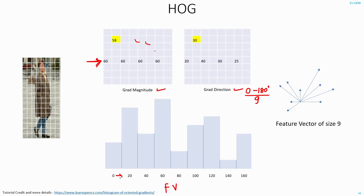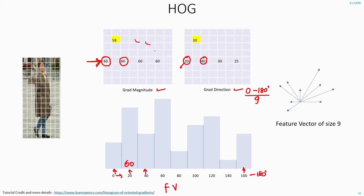That is from 0 to 20 degrees is 1 bin, 20 to 40 is 1 bin, 40 to 60 is 1 bin, and so on. The last bin will be from 160 to 180 degrees. Once I do that, I will check the gradient magnitude and gradient direction at any pixel position. In this case it's 20 degrees, so I will see what the corresponding gradient magnitude is — it is 60. So in the 20 degree bin I will put a value of 60. Next, where the gradient direction is 40 and the corresponding gradient magnitude is again 60, I will write 60 in the 40 degree bin.